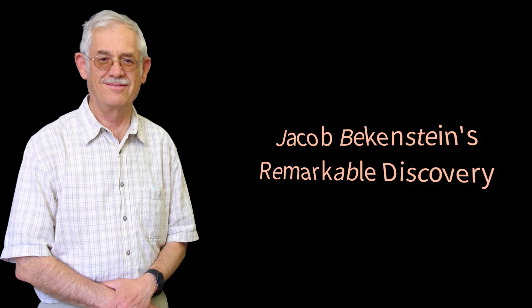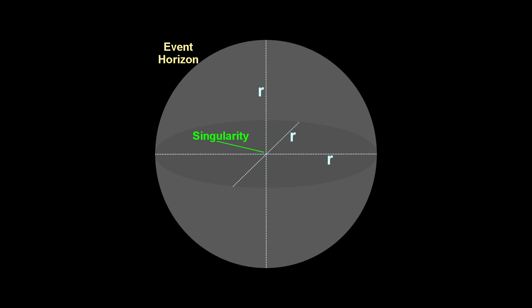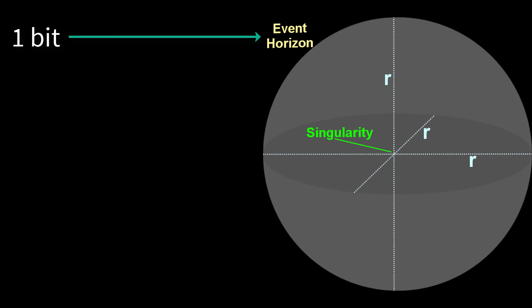In 1972, Jacob Bekenstein calculated the effect of adding one bit of information to a black hole, any black hole of any size. The result was astonishing. He discovered that when a black hole takes in a single elementary particle containing one bit of information, the area of the event horizon increases by one square Planck length.